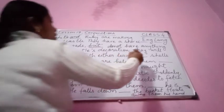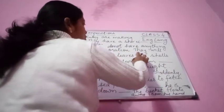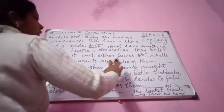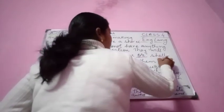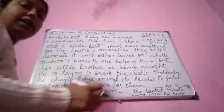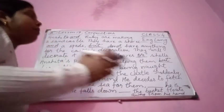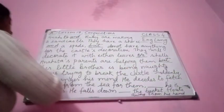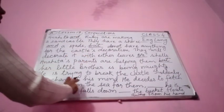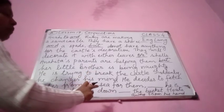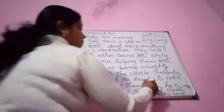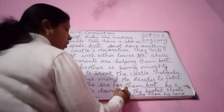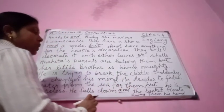They will decorate it with either leaves or shells - where we have 'either', we use 'or', and 'or' shows a choice. Anahita's parents are helping them but her little brother is being naughty - parents are helping but the opposite is the brother being naughty. He is trying to break the castle. Suddenly he changes his mind and decides to fetch water from the sea, and the bucket floats away from his hand.